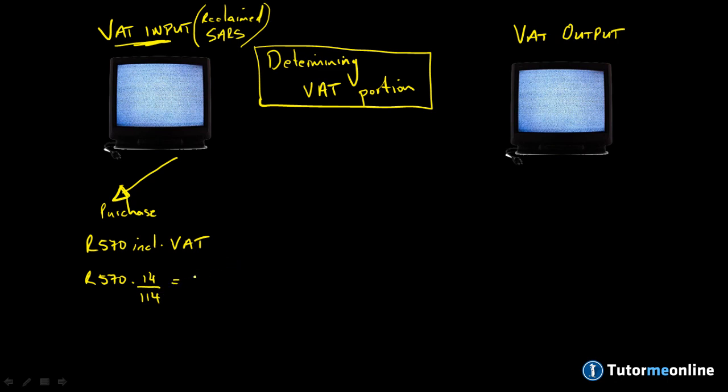How do we do this? We take the 570 Rand and multiply by 14 over 114. This leaves us with the VAT portion. In essence, 570 Rand, which is the price including VAT, minus the VAT portion, gives us the price before VAT, which is 500 Rand. This is an easy equation to memorize so you can determine the VAT portion without going through long mathematical equations. This is VAT input because the flow of the good is coming into the business and the value has been added by the supplier.